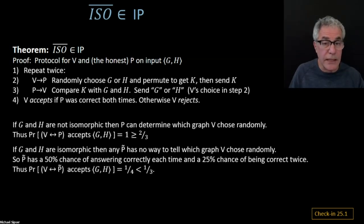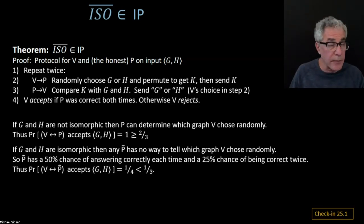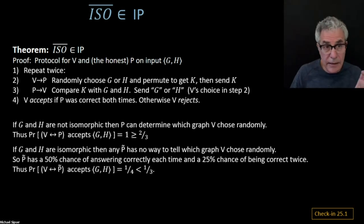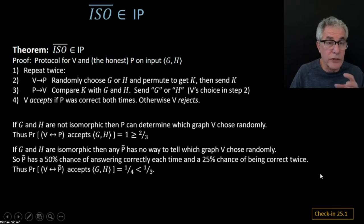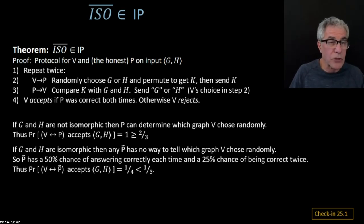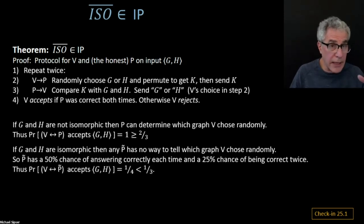Someone's asking if the prover is identifying G or H by brute force. Yes, the prover is going to use its unlimited capabilities to determine, given K, whether it came from G or H. The computational cost of the prover is irrelevant for this — it's just like when we think about a certificate for satisfiability. We don't talk about the cost of finding that certificate for NP. For IP again, we don't talk about the cost of the prover running.